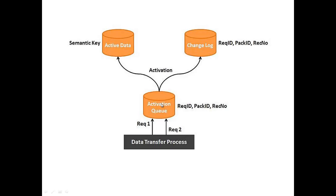Once the data has reached the activation queue table, you activate the DSO. Upon activation, the data is sent simultaneously to both the active data table and the change log table. The active data table is generally used for reporting. The key field chosen while designing the DSO — also known as the semantic key — drives this process. The activation process moves data from the activation queue table into the active data table and the change log table. All changes to existing records are recorded in the change log table, which also has its own request ID, package ID, and record number — different from those of the activation queue table.